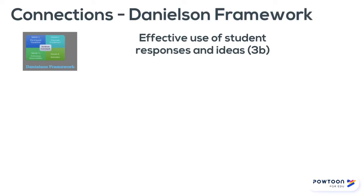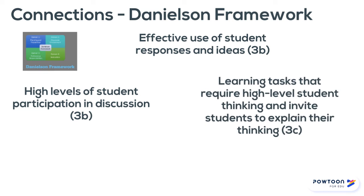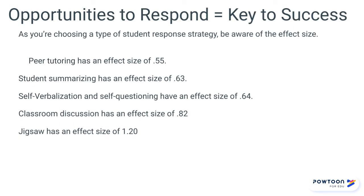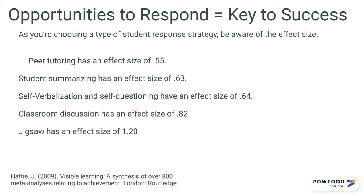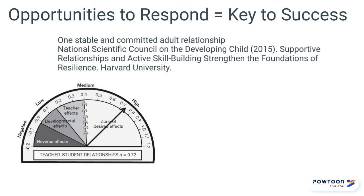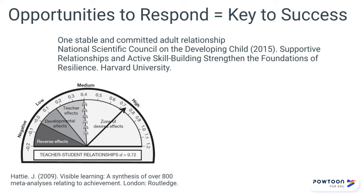Providing academic engagement and multiple opportunities to respond also dovetails nicely with the Danielson framework. Planning for opportunities to respond can be planning for success. As you plan opportunities in your lessons, look for the effect sizes of various strategies you can use. Planning multiple opportunities to respond can be your key to success because it gives you opportunity to establish relationships with students, and strong relationships are often the key to student success.